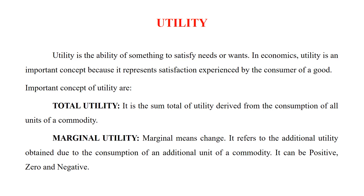Let me take the example of chapati. If somebody is consuming the first chapati and the person is hungry, that will give maximum satisfaction. When consuming the second chapati, it will give comparatively less satisfaction than the first. The third, fourth, fifth — each gives less satisfaction. At one point the utility becomes zero, and if somebody is forcing him to consume one more chapati, that will give negative utility — he may feel nauseous or unwell.